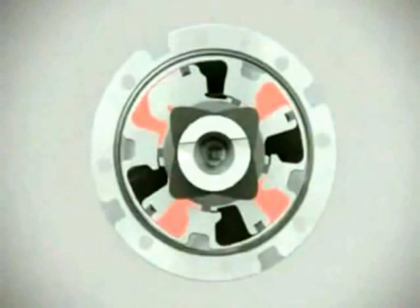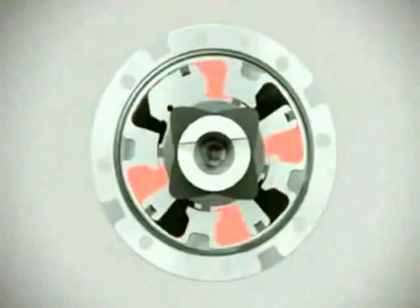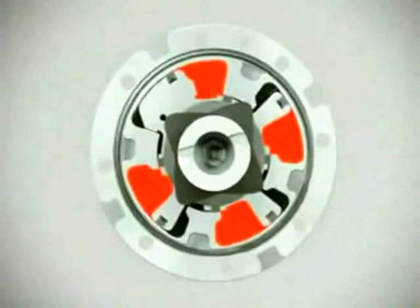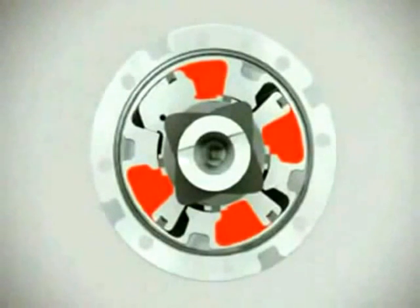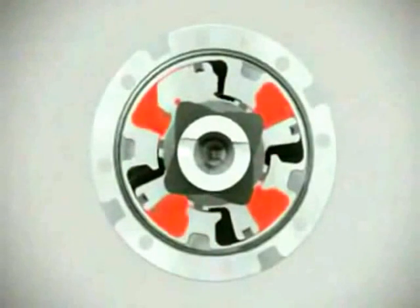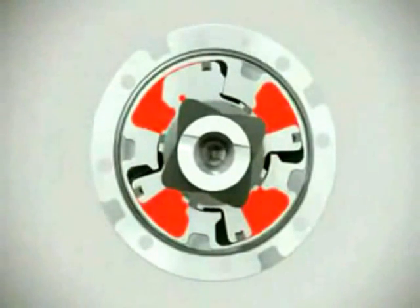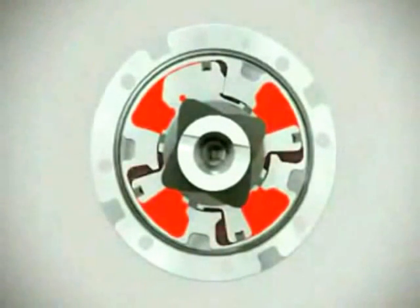The rotor wings divide the housing into separate chambers called advance and retard. When the advance chambers are pressurized with oil, the valve timing is advanced. Conversely, when the retard chambers are pressurized with oil, the valve timing is retarded. The chambers are fed with pressurized oil supplied by the engine's oil pump.